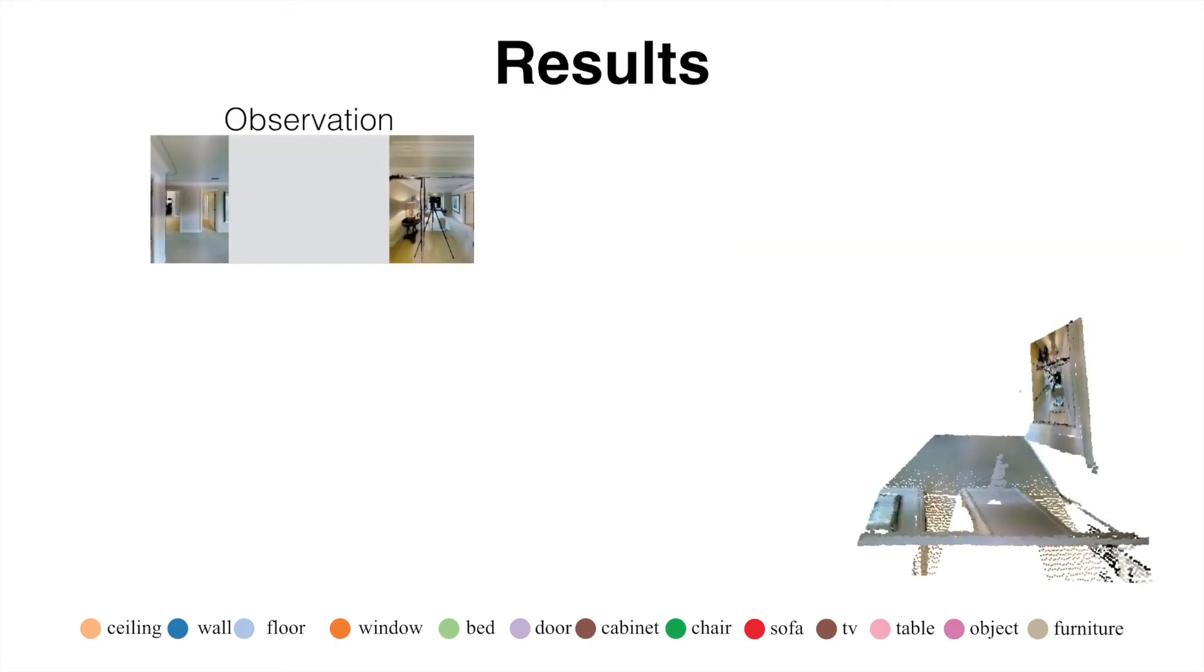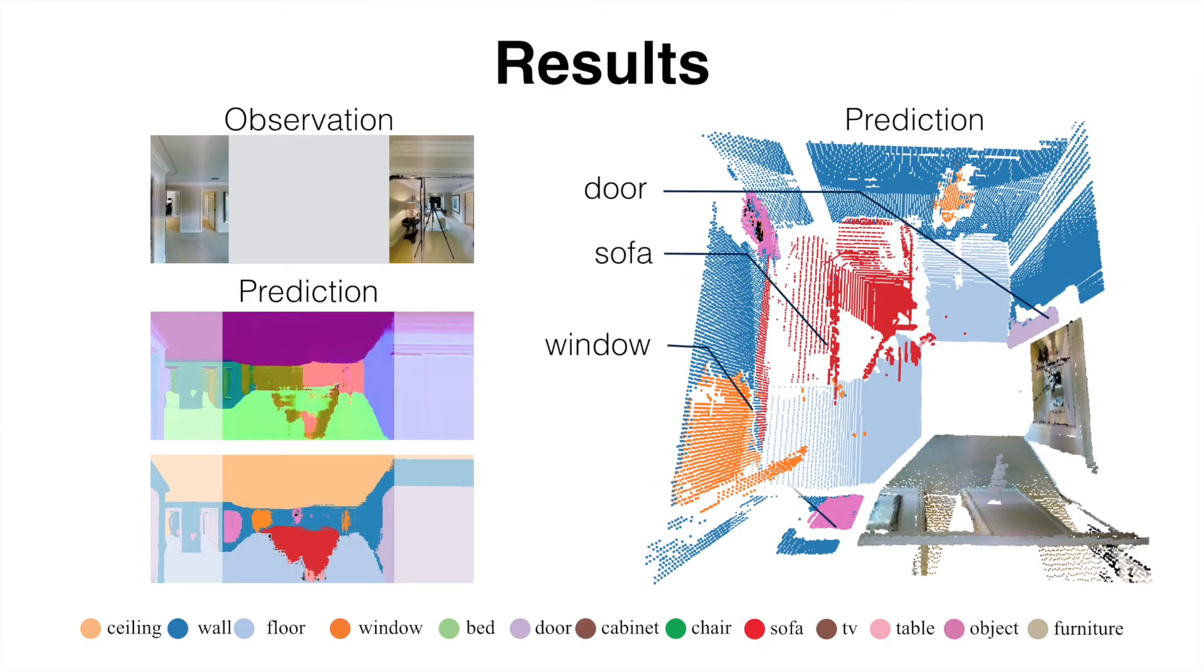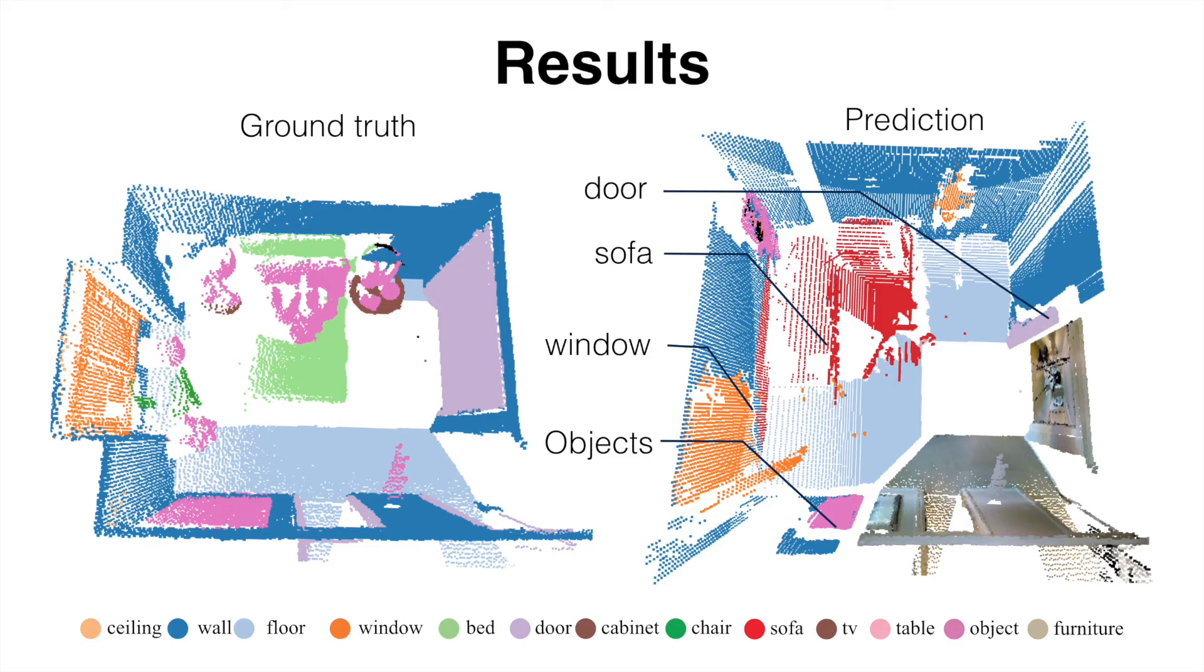Here is another example. The network completes a room as if it were a living room with a sofa, while the ground truth room is a bedroom. Although this prediction is wrong, the overall room structure is a reasonable result.